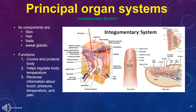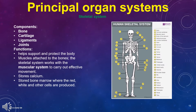The integumentary system components are skin, hair, nails, and sweat glands. Its functions are: 1. Covers and protects the body. 2. Helps regulate body temperature. 3. Receives information about touch, pressure, temperature, and pain. The skeletal system has components: bone, cartilage, ligaments, and joints.